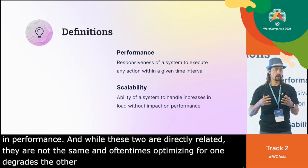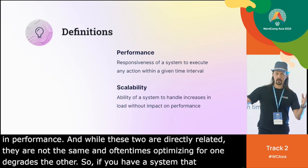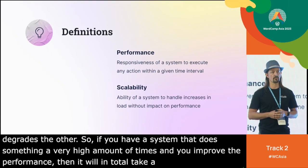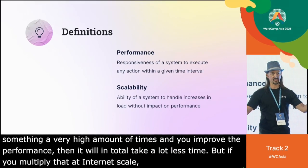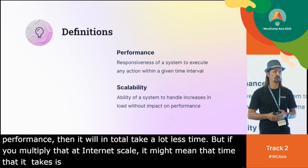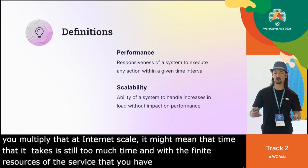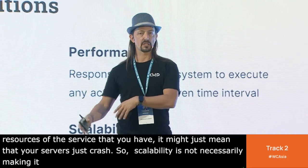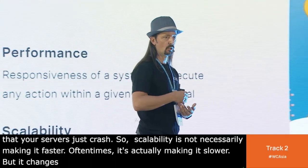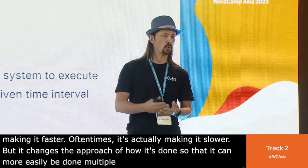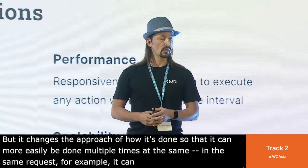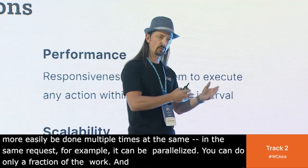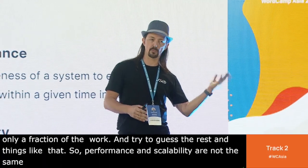If you have a system that does something a very high number of times and you improve the performance, it will in total take a lot less time. But if you multiply that at internet scale, that time might still be too much. With finite server resources, your servers might just crash. Scalability is not necessarily making it faster — oftentimes it's actually making it slower, but changing the approach so it can more easily be done multiple times in the same request, parallelized, or doing only a fraction of the work and guessing the rest.